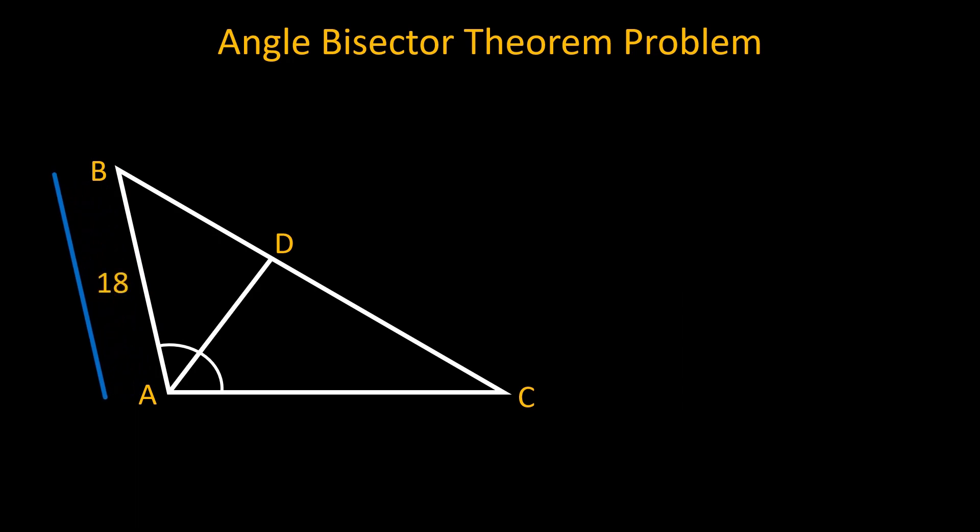According to the angle bisector theorem, AB over AC is equal to BD over DC. Let BD is equal to x.